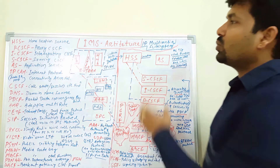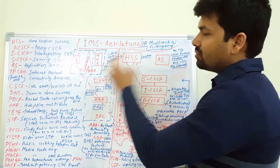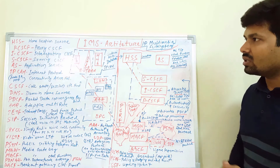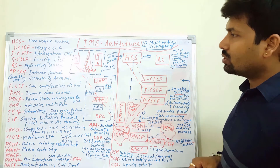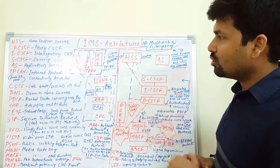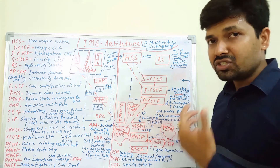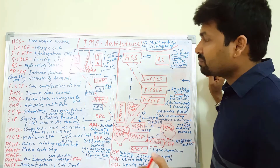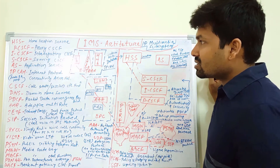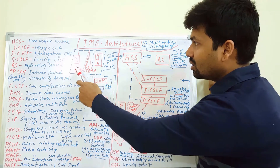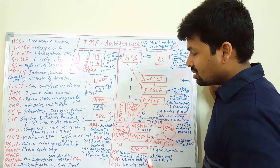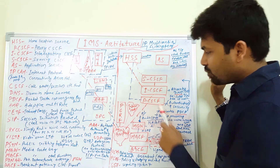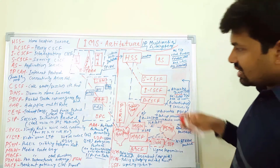Those are all the components and abbreviations we discussed. Finally, I'd like to discuss the call flow from the UE's point of view. The UE connects to the proxy CSCF.